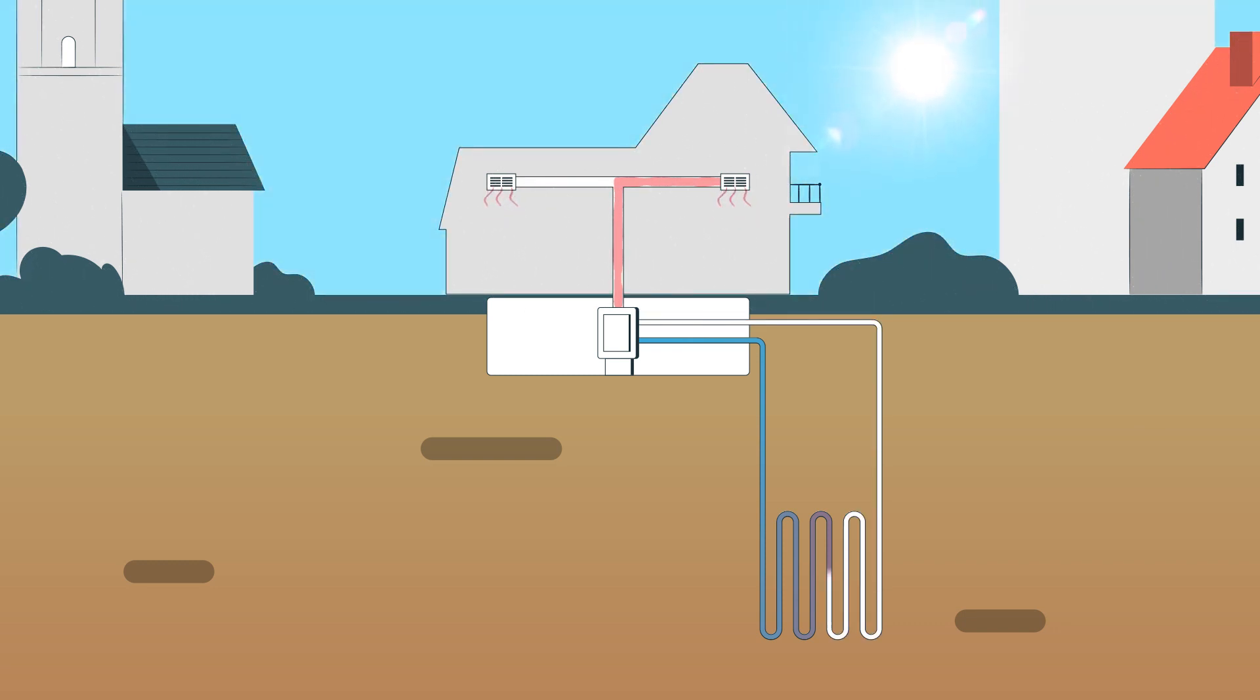On a hot day, the system can run in reverse. The water or refrigerant cools the building and then is pumped underground where extra heat is transferred to the ground around the pipes.